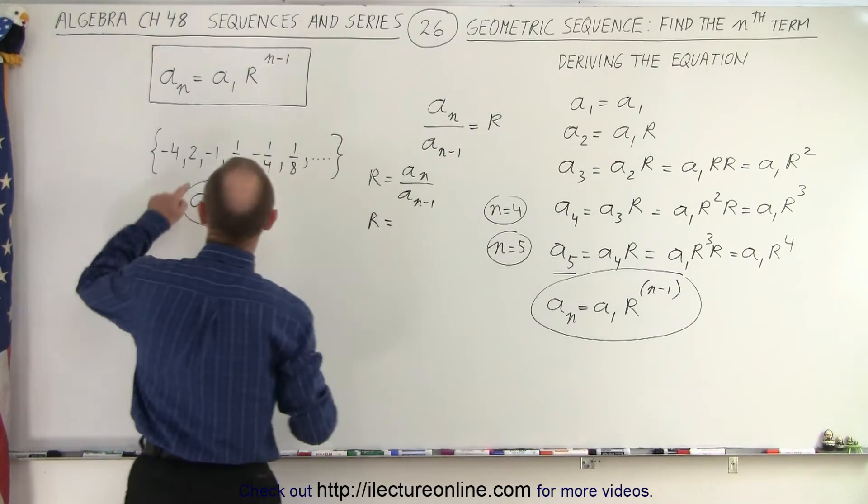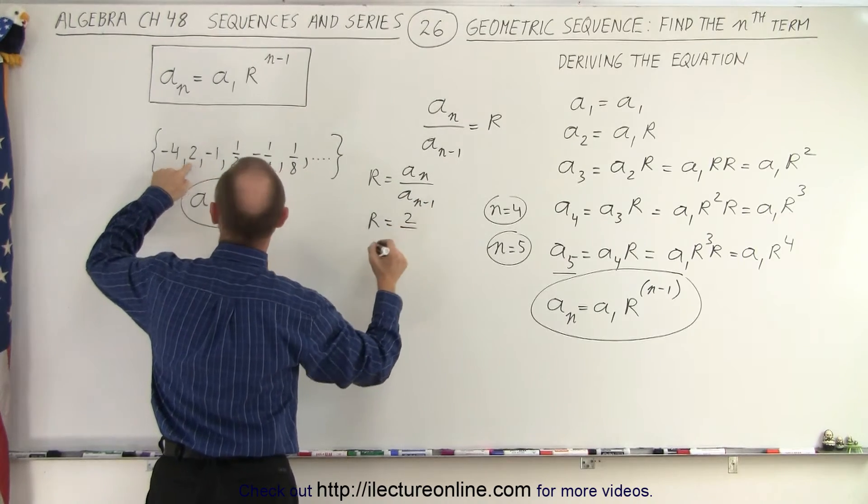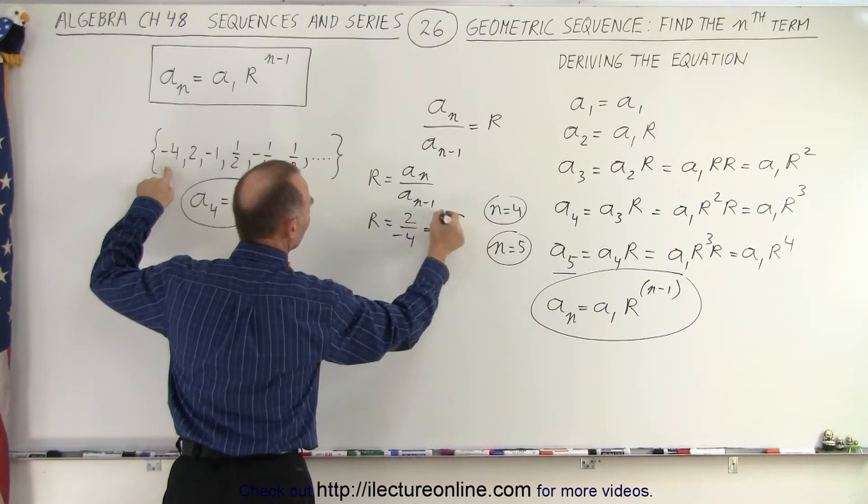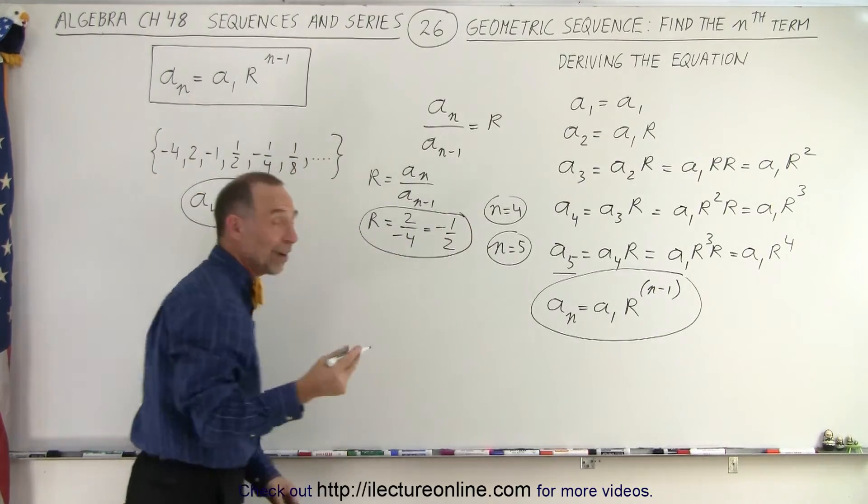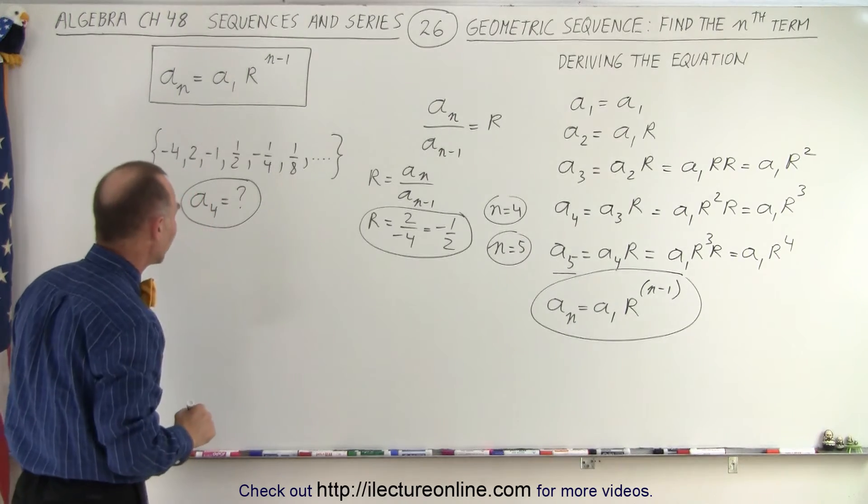So we can say that r is equal to a_n divided by a_(n-1). And so r is equal to, take the second number, so a_n, that would be 2 divided by the previous number which is minus 4, which is minus 1/2. Notice here that the common ratio is a fraction and a negative number, a negative fraction.